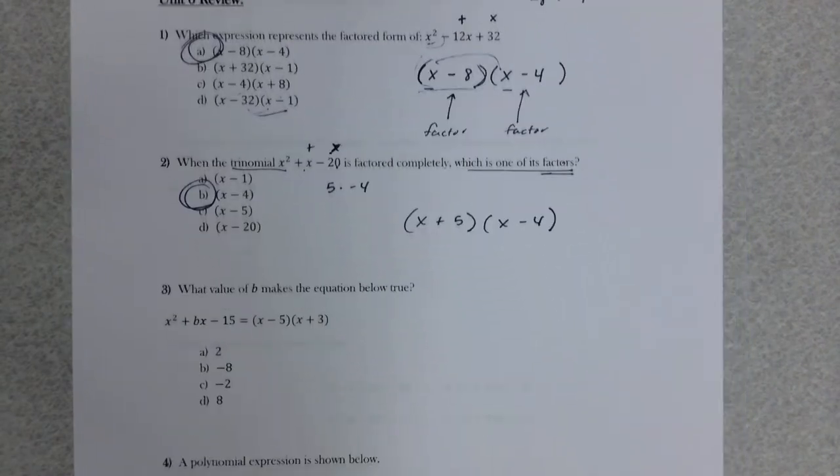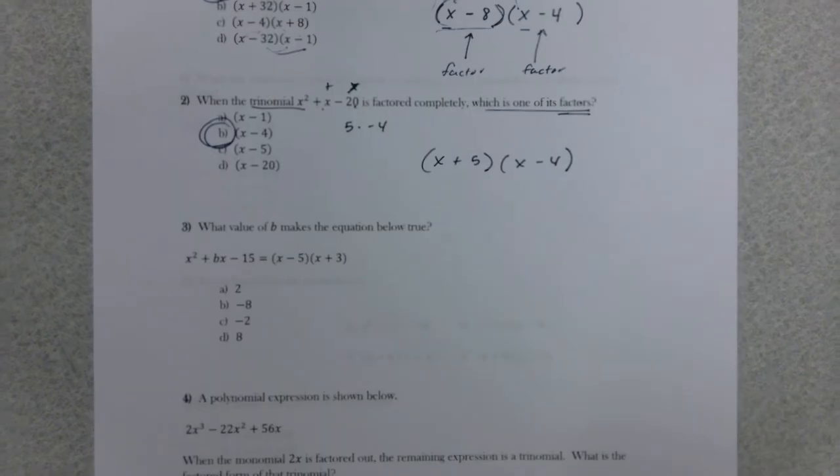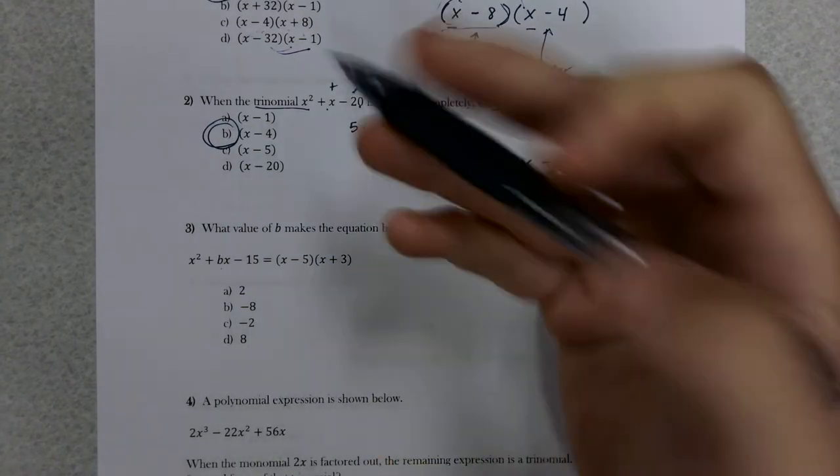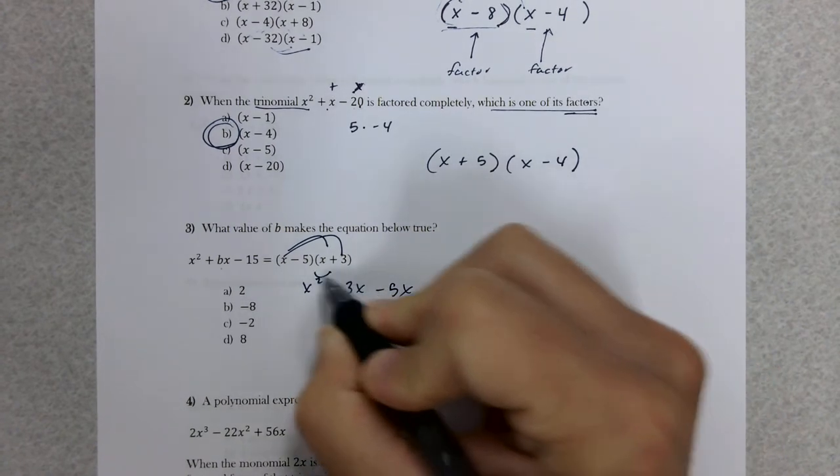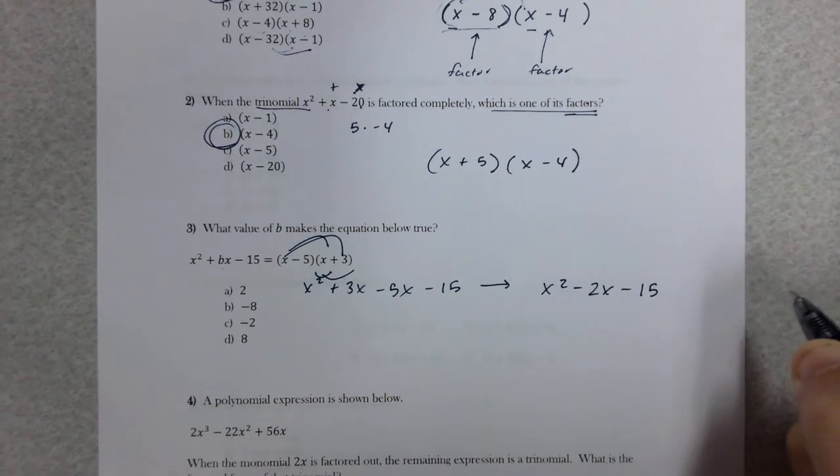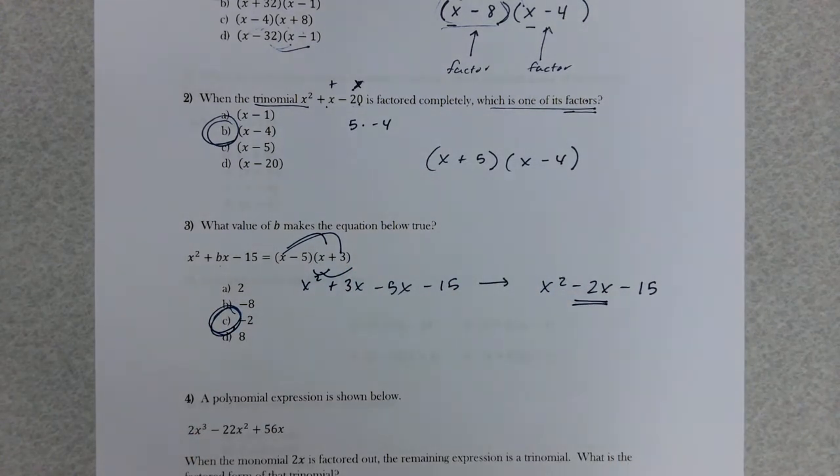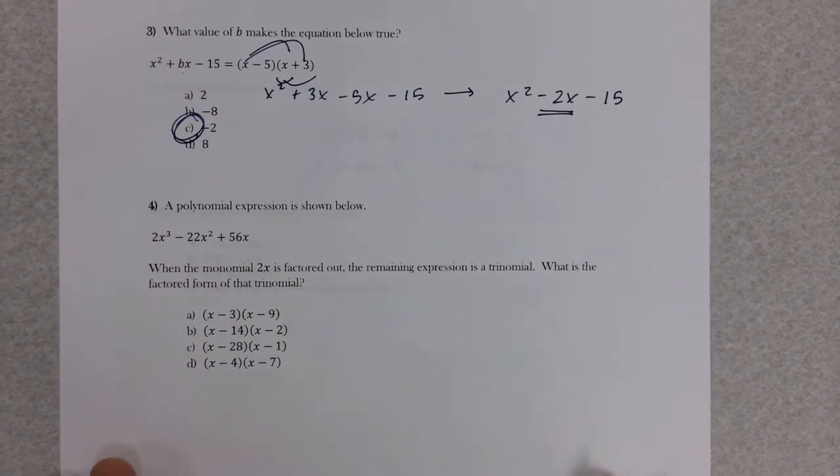Number three, you can do a couple ways. I think the easier way is to multiply. x times x gives x squared plus 3x minus 5x minus 15. When I simplify this all together I get x squared minus 2x minus 15, which means b has to be negative 2. That's why we did unit 5 first. It's easier to multiply rather than to factor.